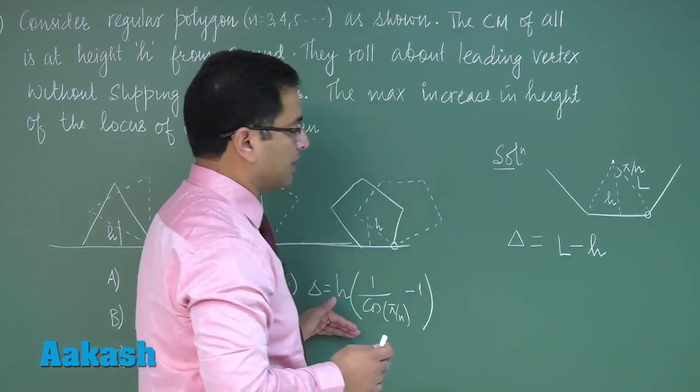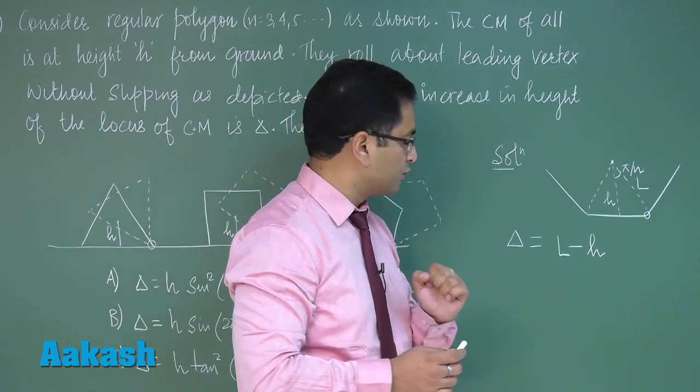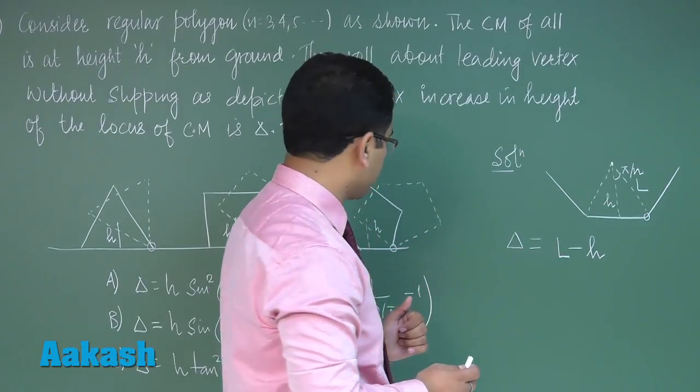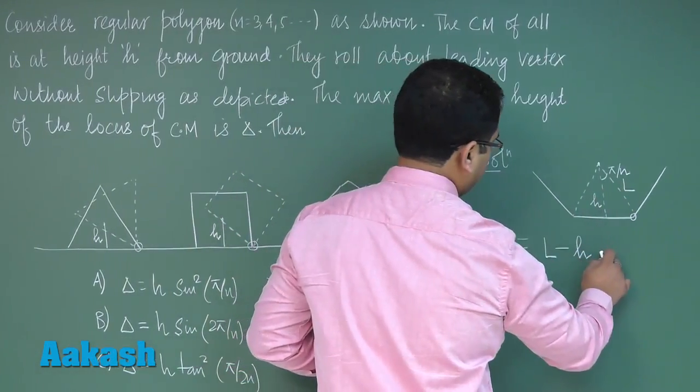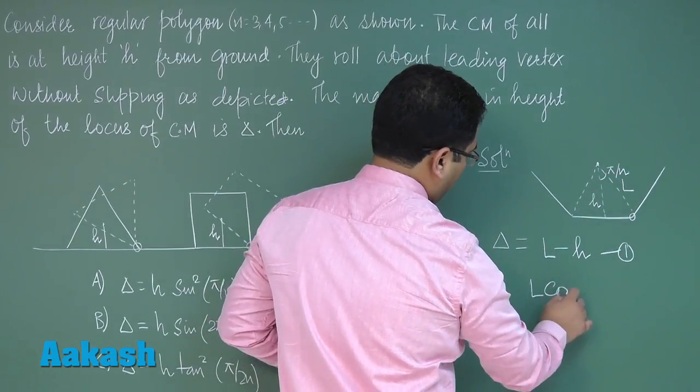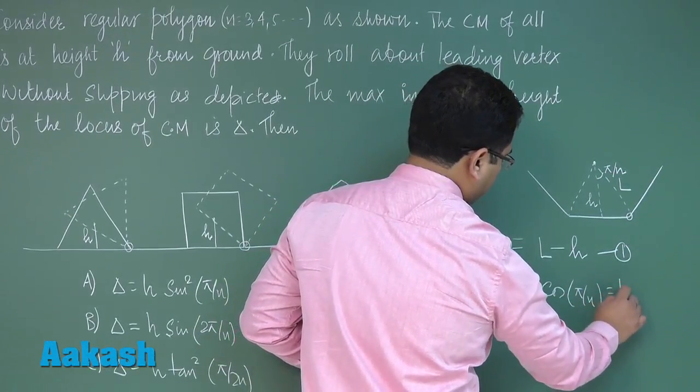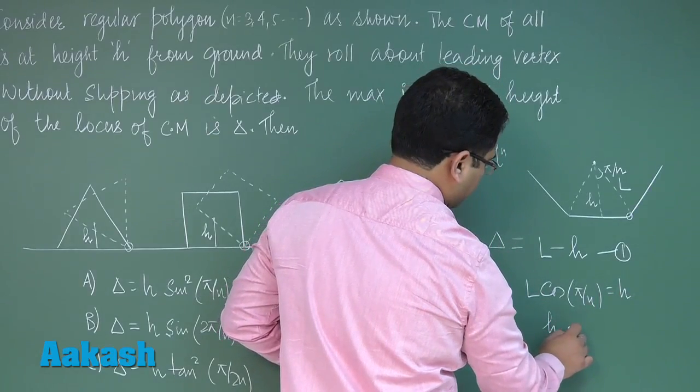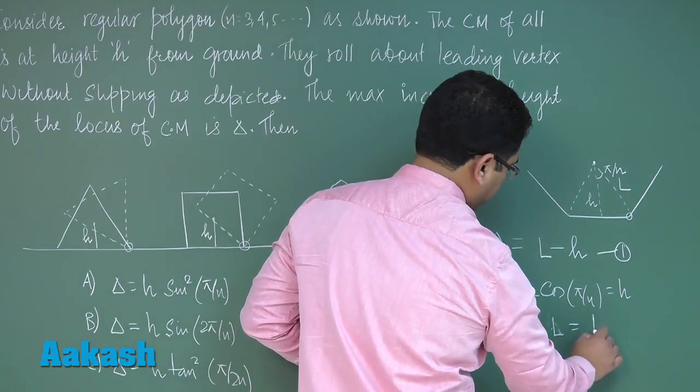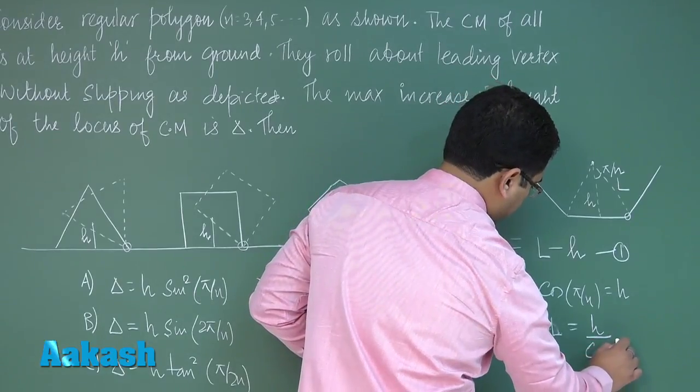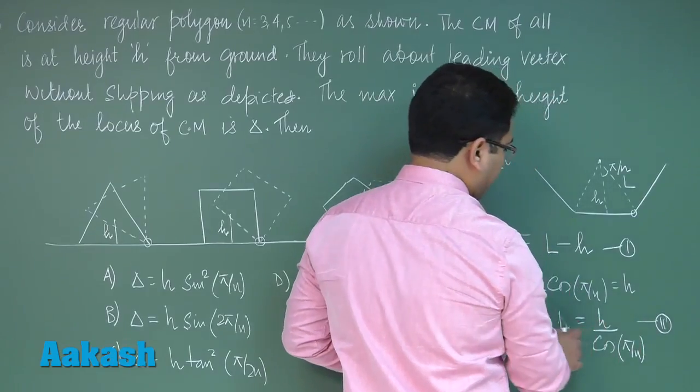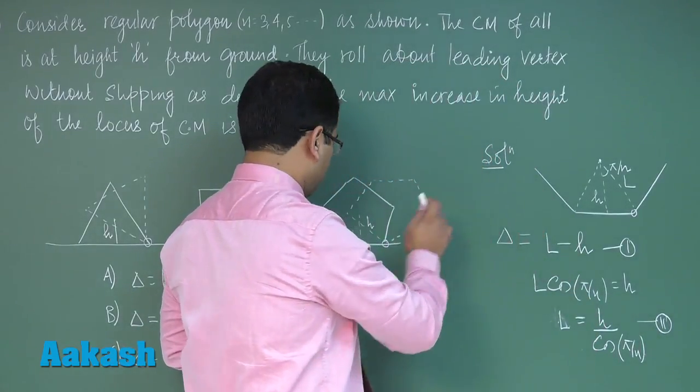We need to get the answer in terms of h, so that means the entire exercise would be to convert l in terms of h. That's very straightforward. In this particular triangle, l cos(π/n) would be equals to h, and the value of l that's been asked is h/cos(π/n).